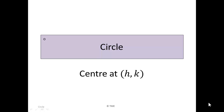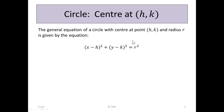Circle with the centre at the general point h, k. The general equation of a circle with centre at point h, k and radius r is given by the equation x minus h squared plus y minus k squared is r squared. And this formula is given in the tables.